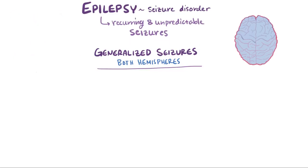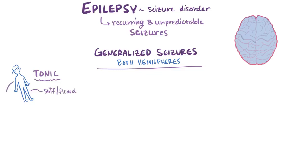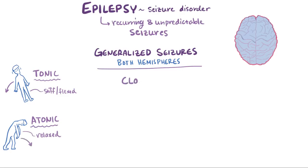Just like focal seizures, there are subcategories of generalized seizures as well. One subtype is a tonic seizure, where the muscles all of a sudden become stiff and flexed, which can cause the person to fall, often backwards. On the flipside, they can be atonic, where muscles suddenly relax and become floppy, which can cause the patient to fall forward. Seizures can also be clonic, where there are violent muscle contractions, also known as convulsions.